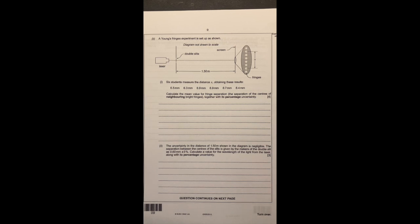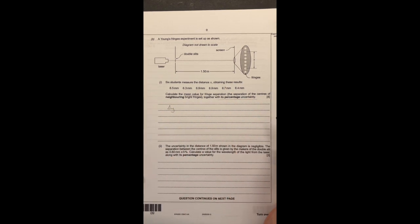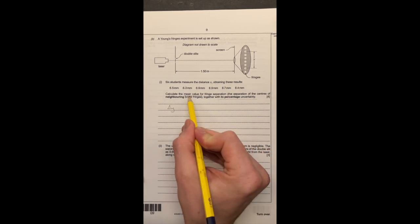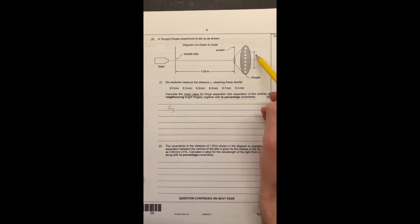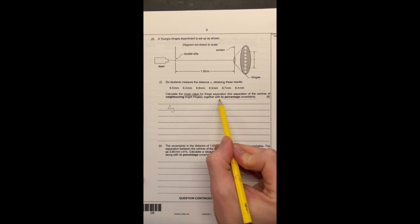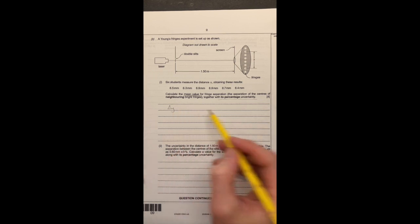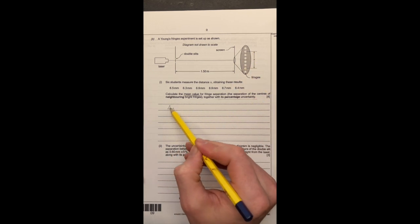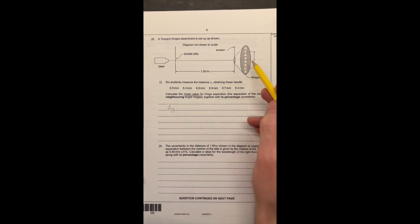This exam question, or part of the exam question, comes from the 2019 Unit 2 paper for AS Physics. So the question asks us to find initially the mean value for the fringe separation and the percentage uncertainty in that reading. So first of all, we need to find the fringe separation or the average fringe separation.